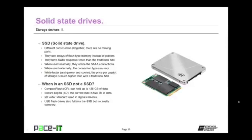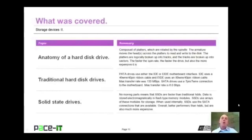Then there are secure digital cards — SD cards — with a current max capacity of 2 terabytes. We also have the older XD standard, used in some digital cameras but now considered obsolete. USB flash drives could also fall into the SSD category, but most people think of them as their own category. That concludes this session on storage devices part two — the anatomy of a hard disk drive, aspects of the traditional hard disk drive, and solid state drives.